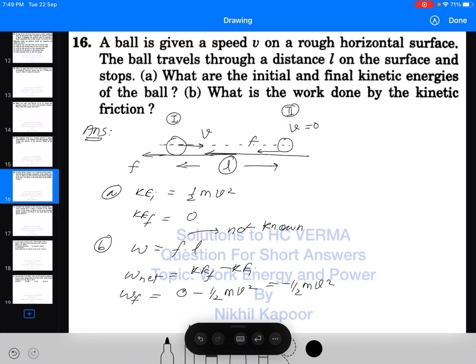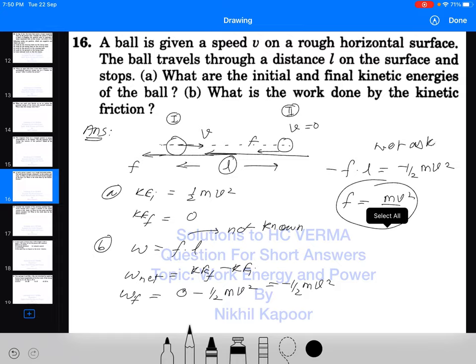As the displacement L is given, we can also calculate the frictional force by F into L equals minus half m v square. Negative work done. So frictional force will be equal to m v square upon 2L. Also, we can calculate but it is not asked in the question. Only this much is asked. Thank you.